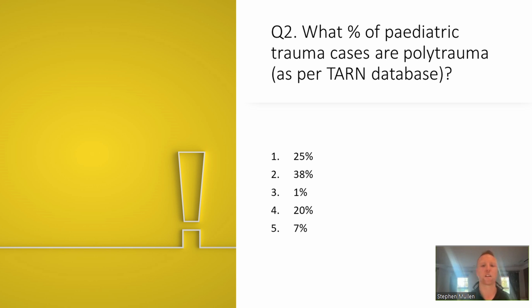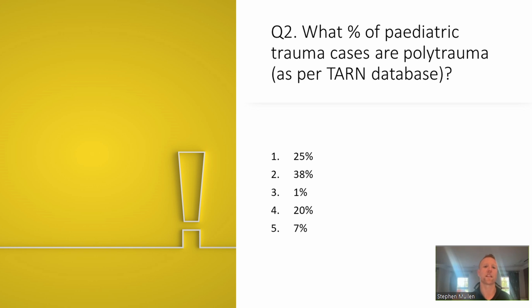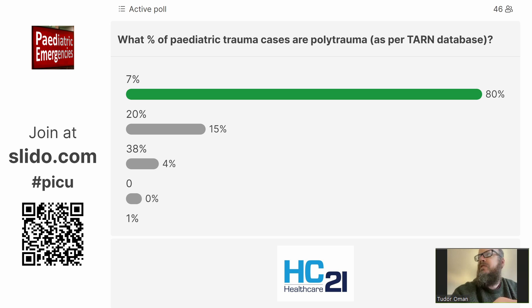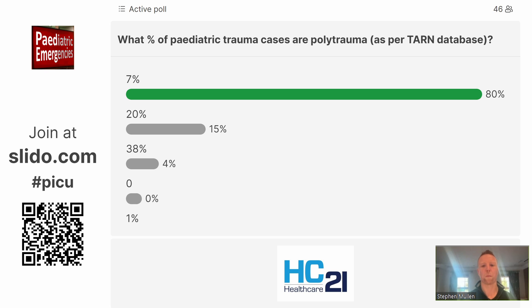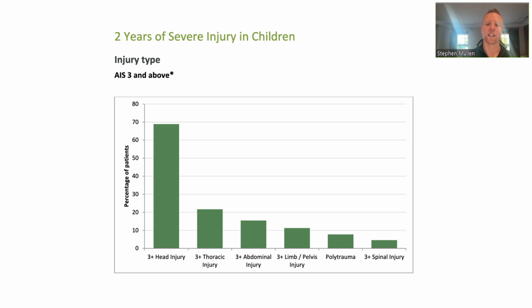Question two: what percentage of paediatric trauma cases are polytrauma — more than two body systems injured? This is based on TARN data — the Trauma Audit Research Network, which collates data from the UK and Ireland. The majority in the chat said 7%, and that is the correct answer. Polytrauma is 7% in paediatrics. This compares to adult data of between 20% and 40%, and particularly in silver trauma cases where a simple mechanism can cause multiple body injuries. In paediatrics, this isn't the case.